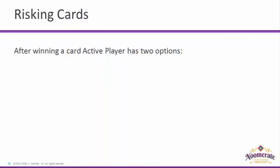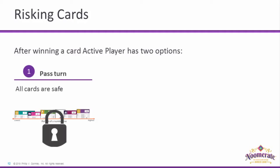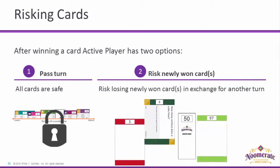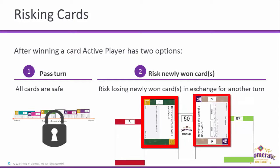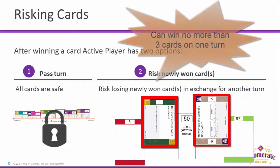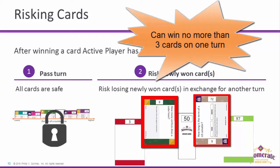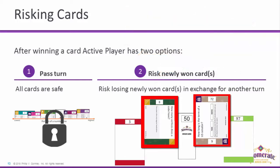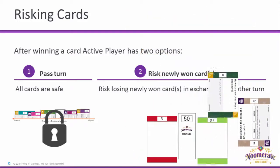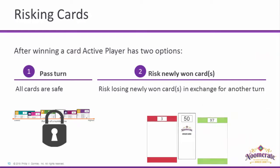Risking cards: whenever a player wins a card, on their turn or someone else's, they become the active player and have two options. One, they may pass their turn to the next player and keep the card they just won, or two, they may risk that card for another turn. If they choose to risk the card, they move the game piece to one of the three adjacent tiles and try for another card. If they again answer correctly, they may try for a third card, this time risking two cards. A player may win a maximum of three cards on one turn. If they answer incorrectly at any point, they must discard the one or two cards that were at risk, and the next player may attempt to win the current card.